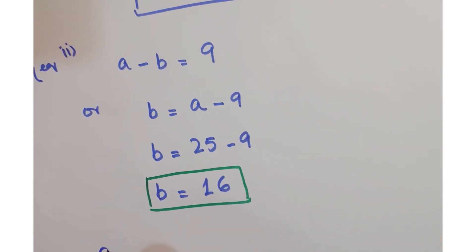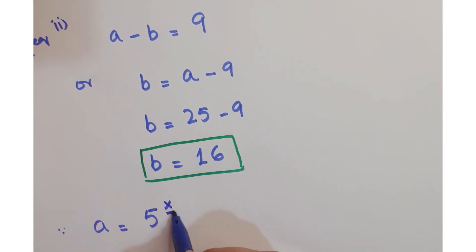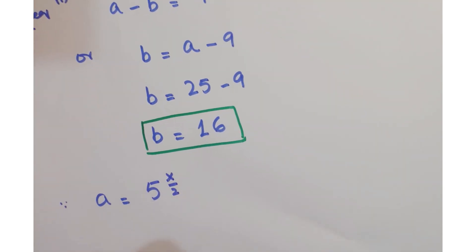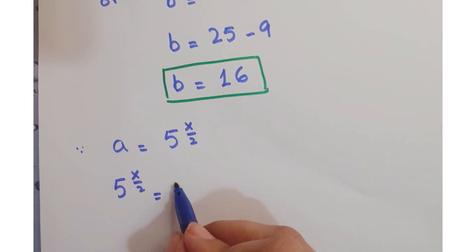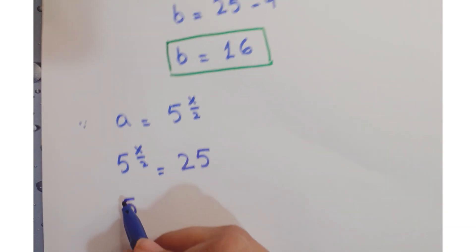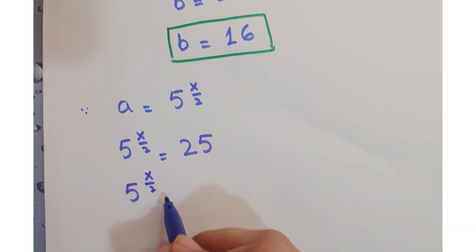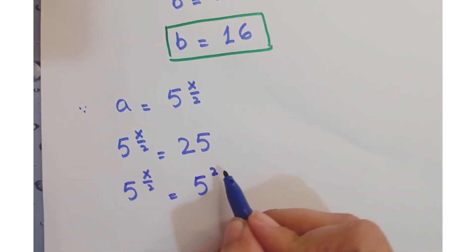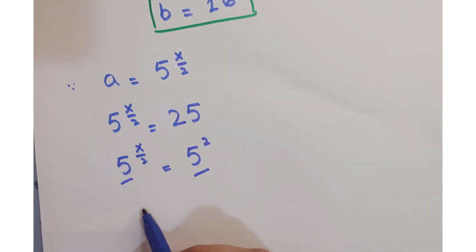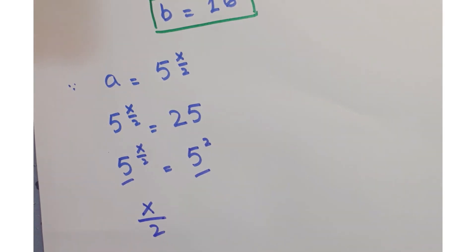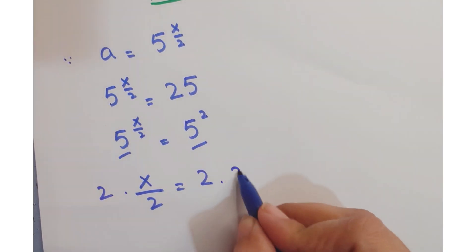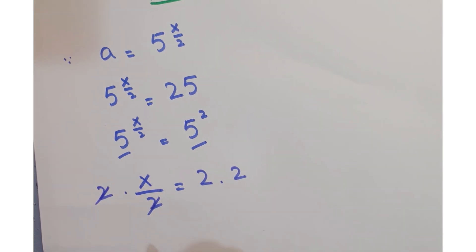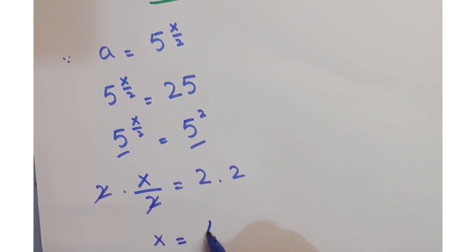Since a equals 5 to the power x upon 2, as we assumed earlier, we can write that 5 to the power x upon 2 equals 25, or 5 to the power x upon 2 equals 5 squared. We have the same base, so we equate their exponents: x upon 2 equals 2. Multiplying both sides by 2, the 2s cancel, giving x equals 4.